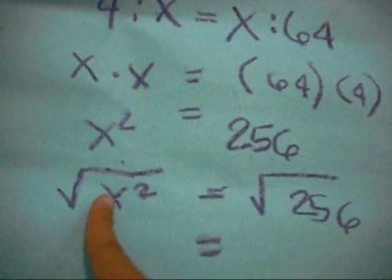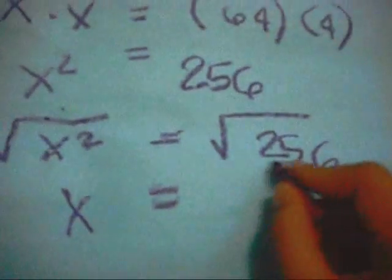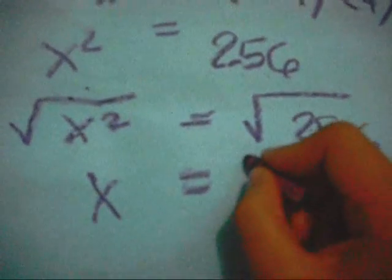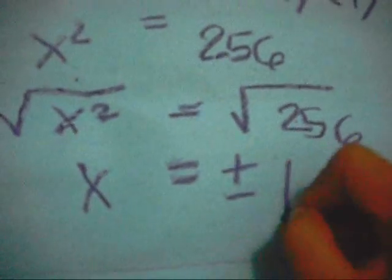The square root of X squared is equal to X and the square root of 256 is equal to positive or negative 16.